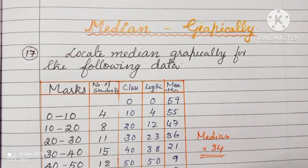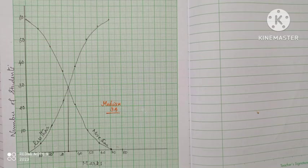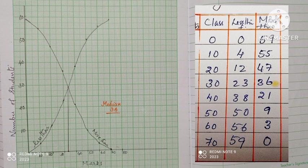Locate median graphically. In the question, marks and number of students are given. We have to find median graphically. For finding median graphically, we have to make the columns fourth and fifth one, that is cumulative frequencies. After finding the cumulative frequency, we have to plot marks on the x-axis and the number of students on the y-axis. Corresponding to each point, we have to plot.